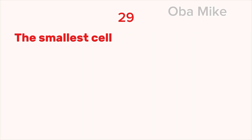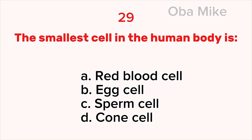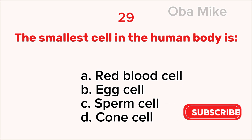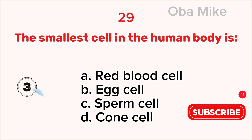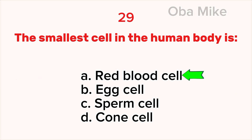29. The smallest cell in the human body is A. Red blood cell, B. Egg cell, C. Sperm cell, D. Cone cell. The correct answer is A. Red blood cell.